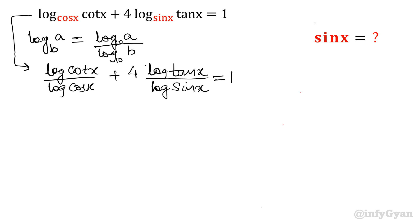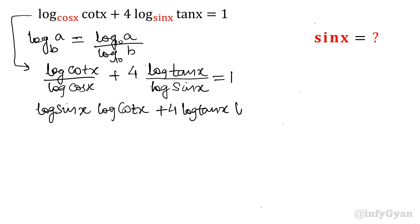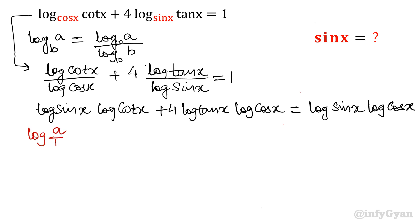Now let's take LCM. So we get: log(sin x)·log(cot x) plus 4 times log(tan x)·log(cos x) equal to log(sin x) times log(cos x). Now the second property of logarithm will come into the picture — the quotient property: log(a/b) can be written as log a minus log b.